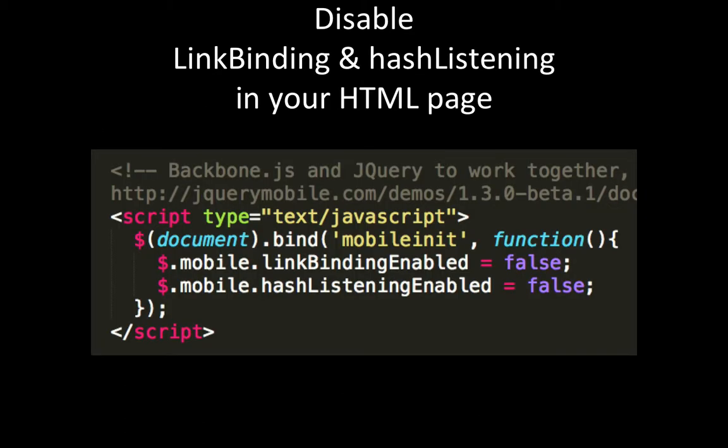Before that, for Backbone to work with jQuery Mobile you have to disable two things. You have to disable link binding, which is on by default in jQuery Mobile and which jQuery Mobile uses to bind to anchor tags — it handles blurring and active tags. You also need to disable hash listening. jQuery Mobile routes using window.location.hash, but we're going to use Backbone to handle both of these.